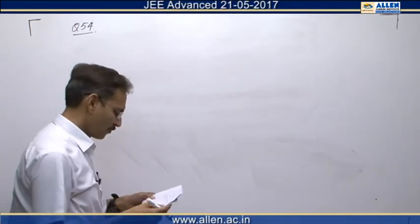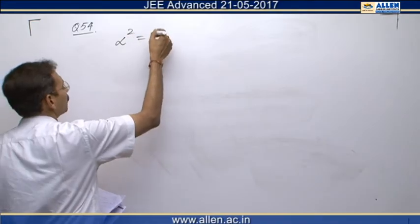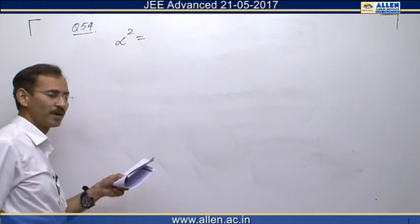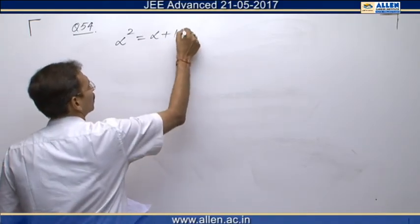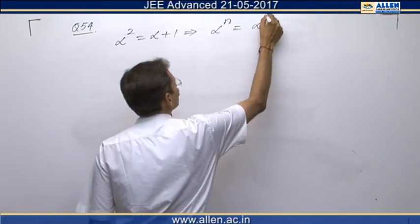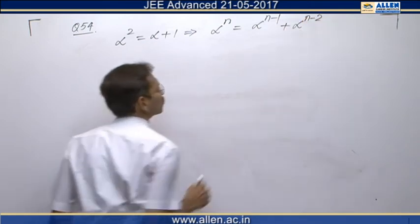Question number 54. An equals alpha raise to the power n equals alpha raise to the power n minus 1 plus alpha raise to the power n minus 2 using this relation. I will multiply alpha raise to the power n minus 2 in it. This gives us alpha power n equals to alpha raise to the power n minus 1 plus alpha raise to the power n minus 2. Similarly for beta.